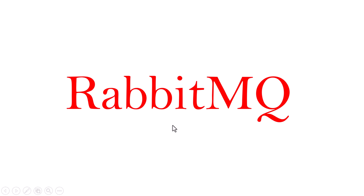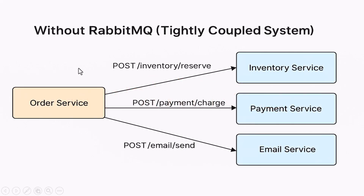Let's say you are building an online store. A customer comes in, adds a phone to their cart, and clicks the place order button. Your backend — let's call it the order service — now has to do multiple things: it needs to check the inventory and reserve the product, it needs to process the customer's payment, and it needs to send a confirmation email once everything is done.